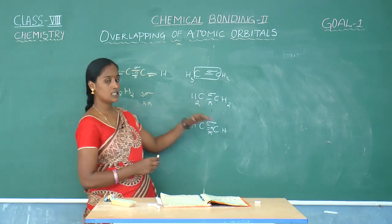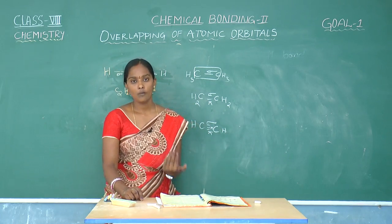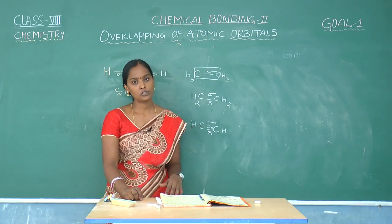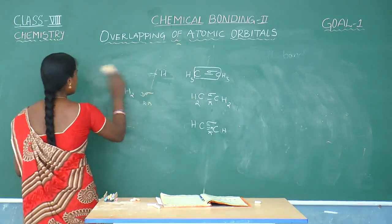If the number of bonds increases, there is only one sigma bond and remaining all bonds which are added between any two atoms are called as pi bond.